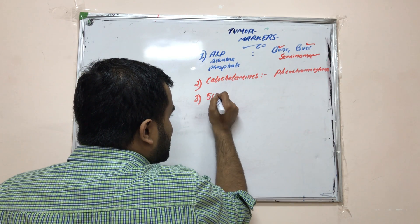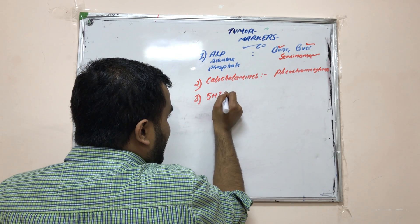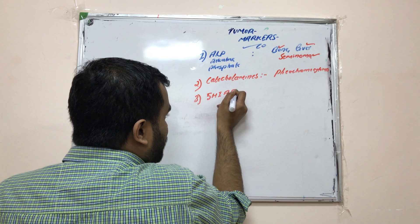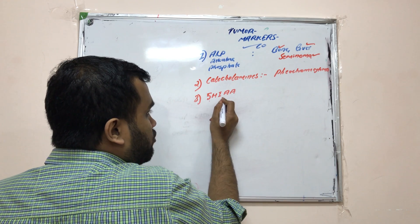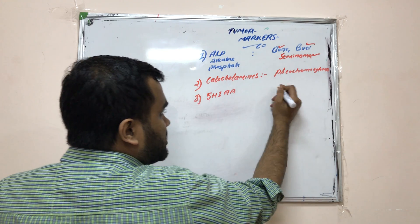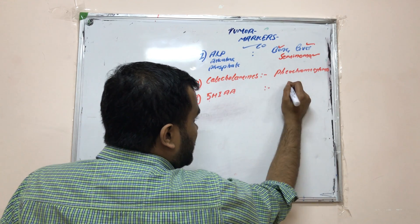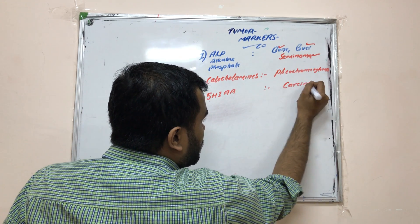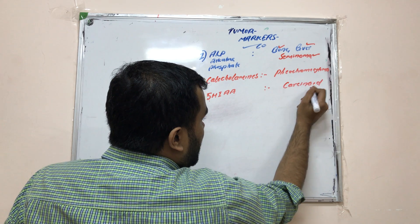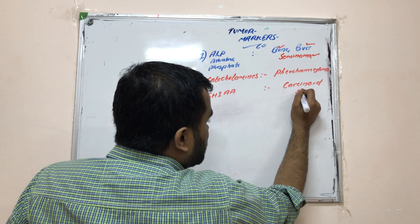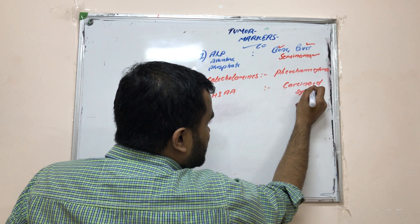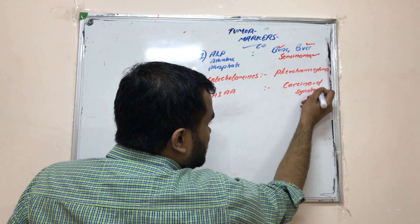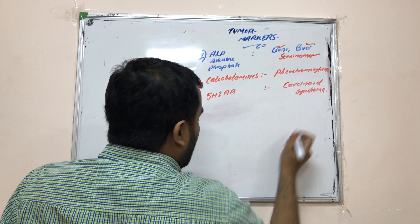Then there is 5-HIAA — 5-hydroxyindoleacetic acid. It is elevated in carcinoid syndrome, which is a serotonin-secreting tumor.